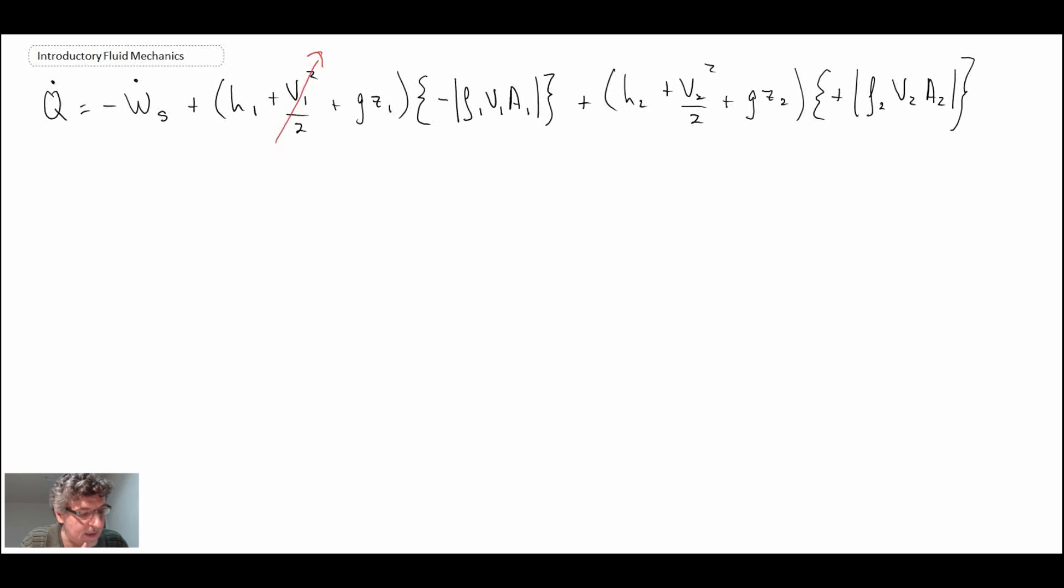Another thing that we can do—we have here rho one v one a one and then here we have rho two v two a two. We know from continuity that that was just what we called the mass flow rate, and so we can replace that.